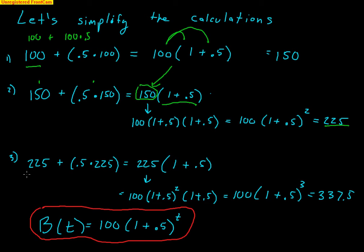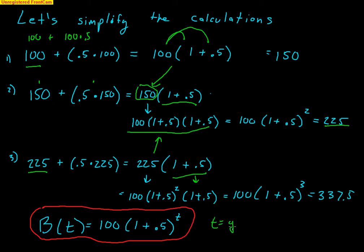In the third year, I take 225 stores and add 50% of that. Factoring out 225 gives 225 times (1 plus 0.5). But that 225 came from 100 times (1.5) squared times another (1 plus 0.5), which makes 100 times (1 plus 0.5) cubed, or 337.5 stores. So an equation for Business B would be 100 times (1 plus 0.5) raised to T, where T is the number of years.